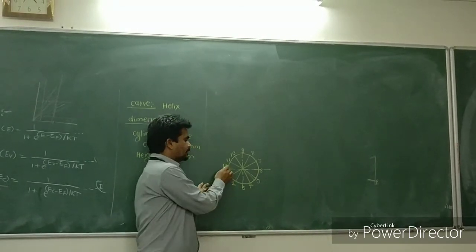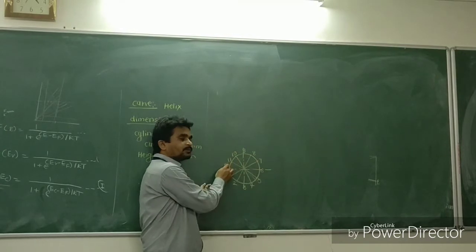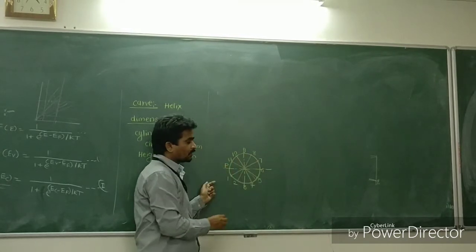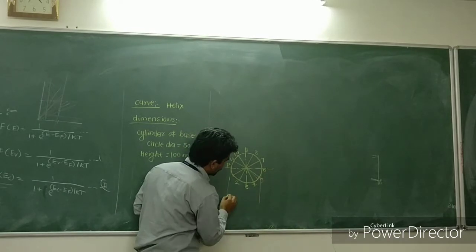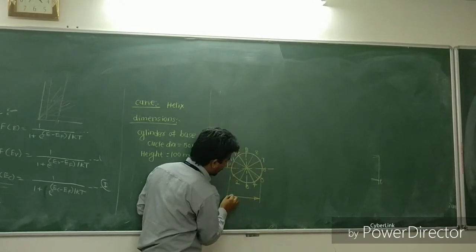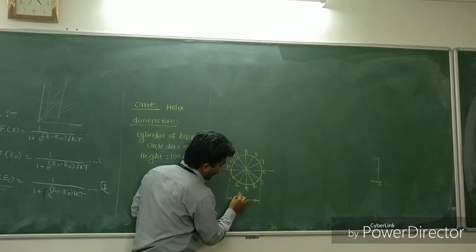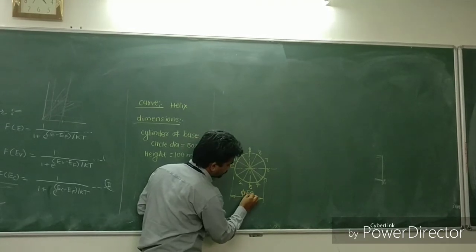So point P is starting from here and it again comes to the same point. So you give the dimension for this circle. The dimension is always going to be the symbol Φ and Φ50 is here.